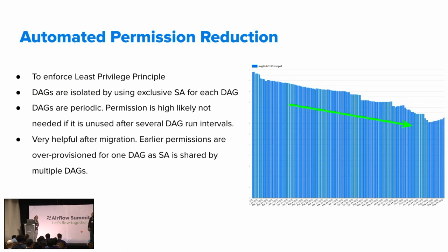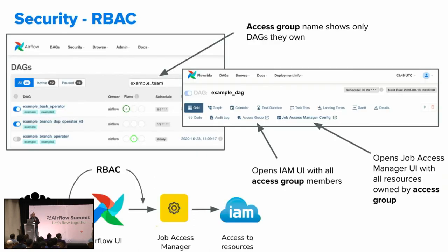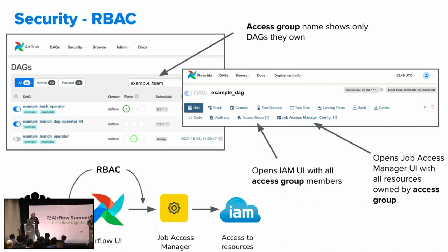Now I'll hand the time to Yuri to talk about other aspects of security. Hi, I'm Yuri DeSatnik. I'm a technical program manager in security for the Airflow project at Snap. I'd like to talk about the role-based access control system we've implemented. The basic premise is that we use access groups representative of teams to control access to the UI and also acquisition of resources by these DAGs. Each DAG has its own service account, so members of a team can access a limited group of DAGs that no other team can control, and can request resources for the service accounts of those DAGs.